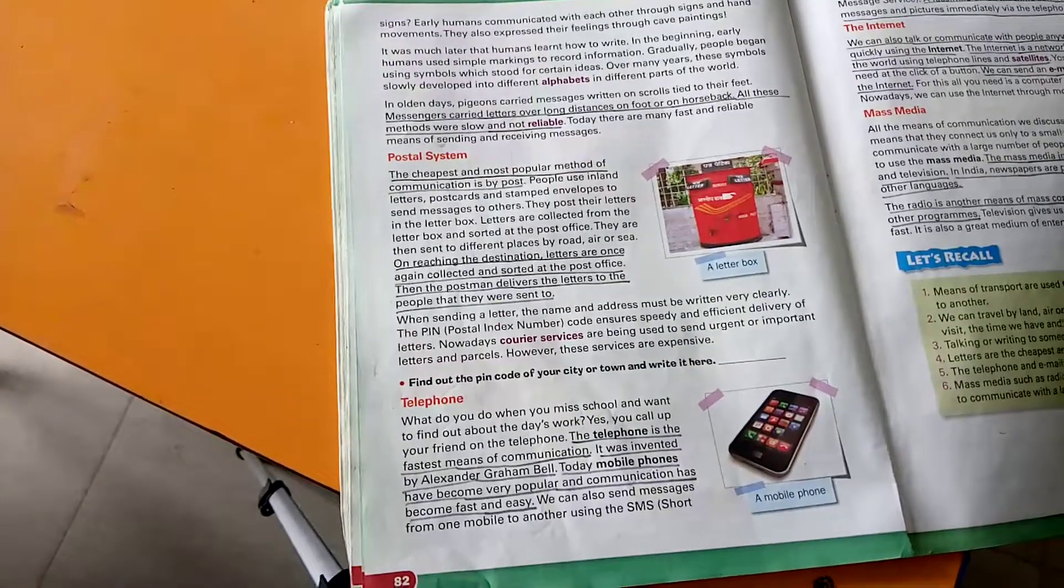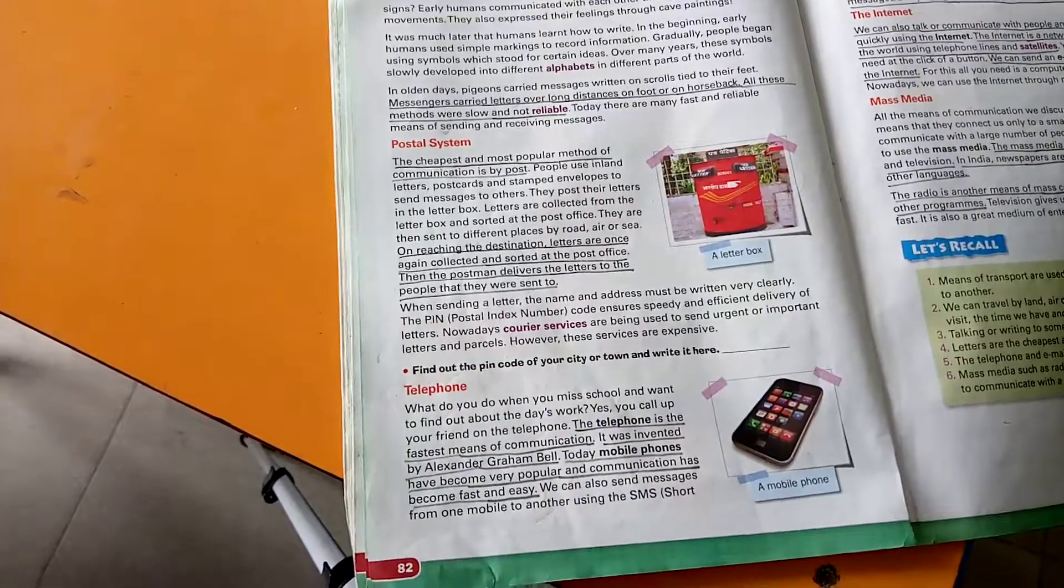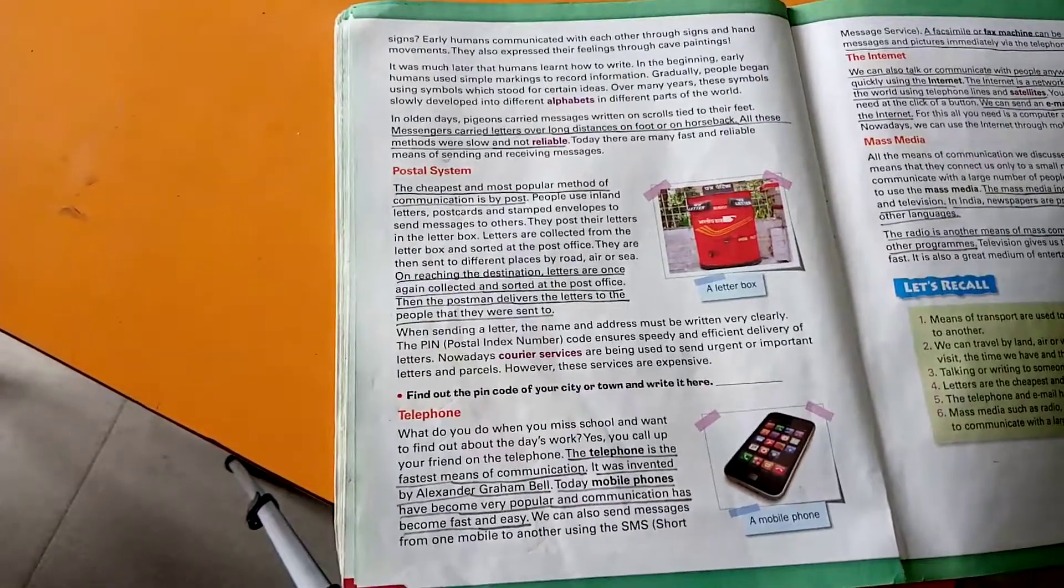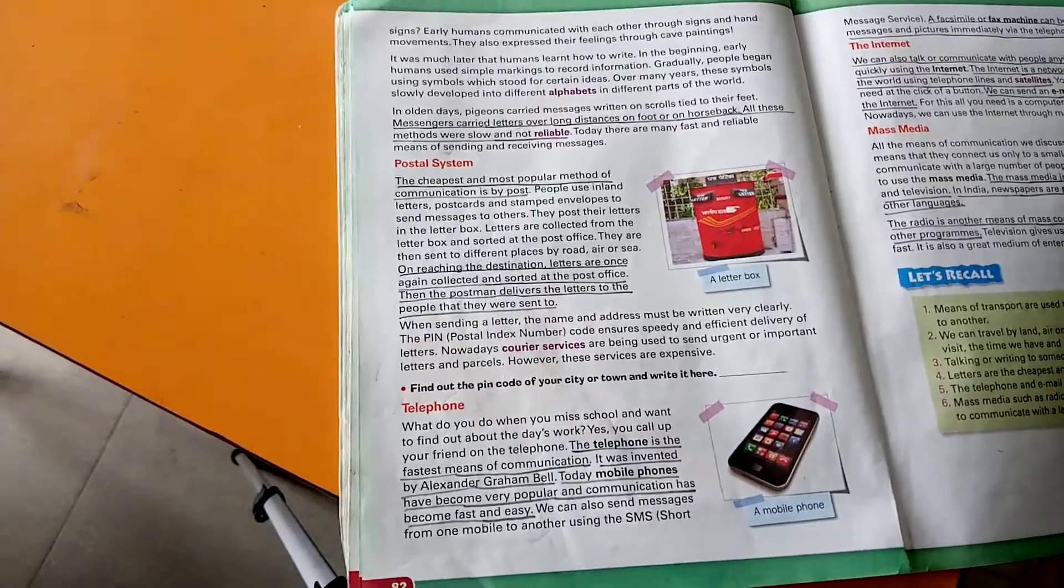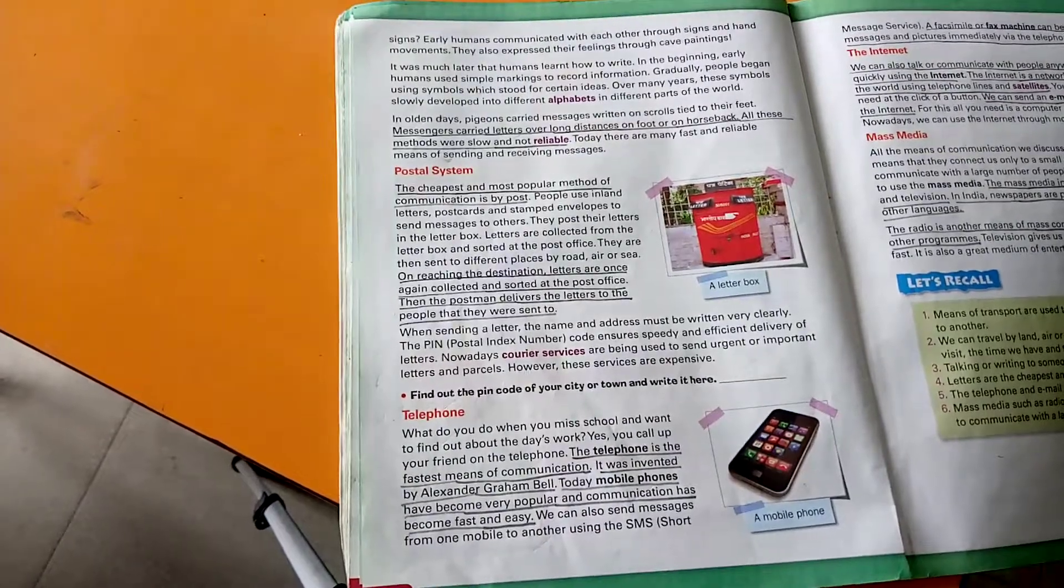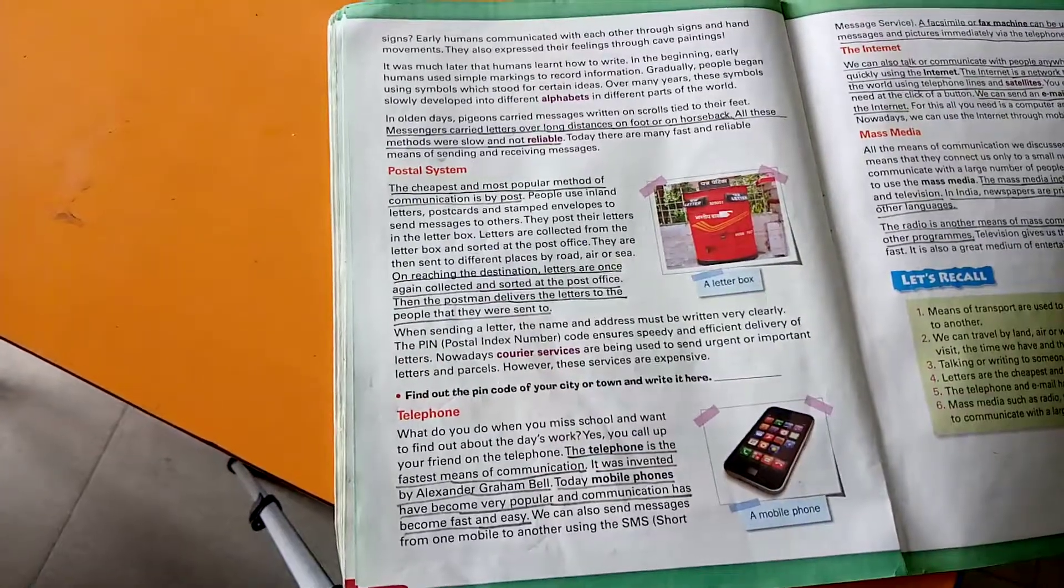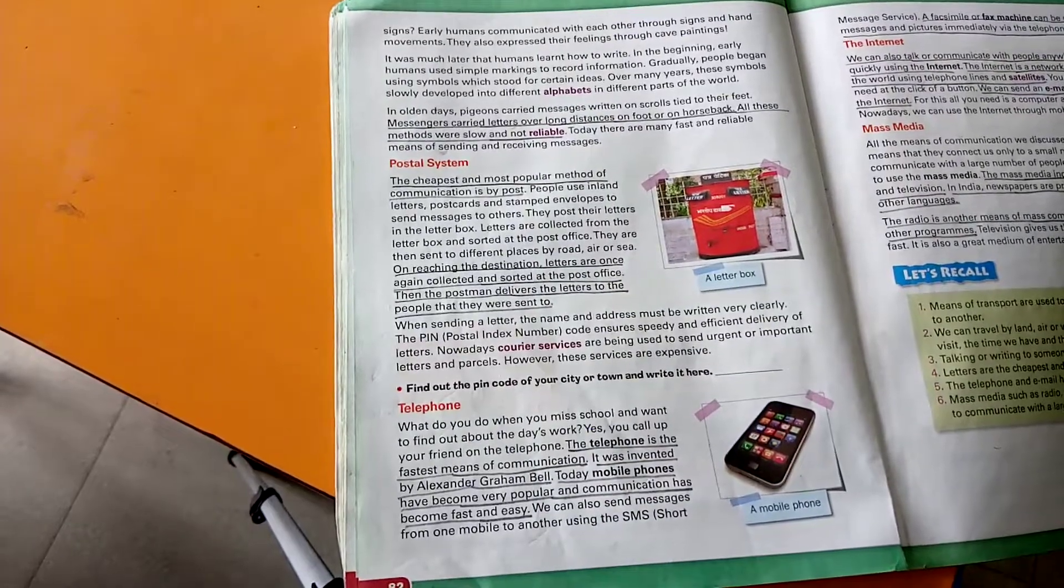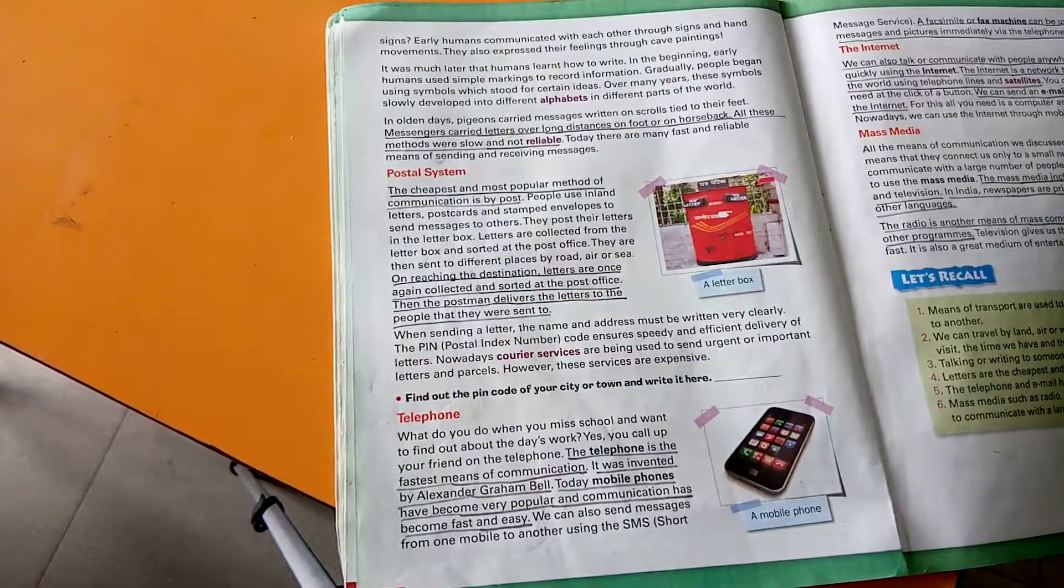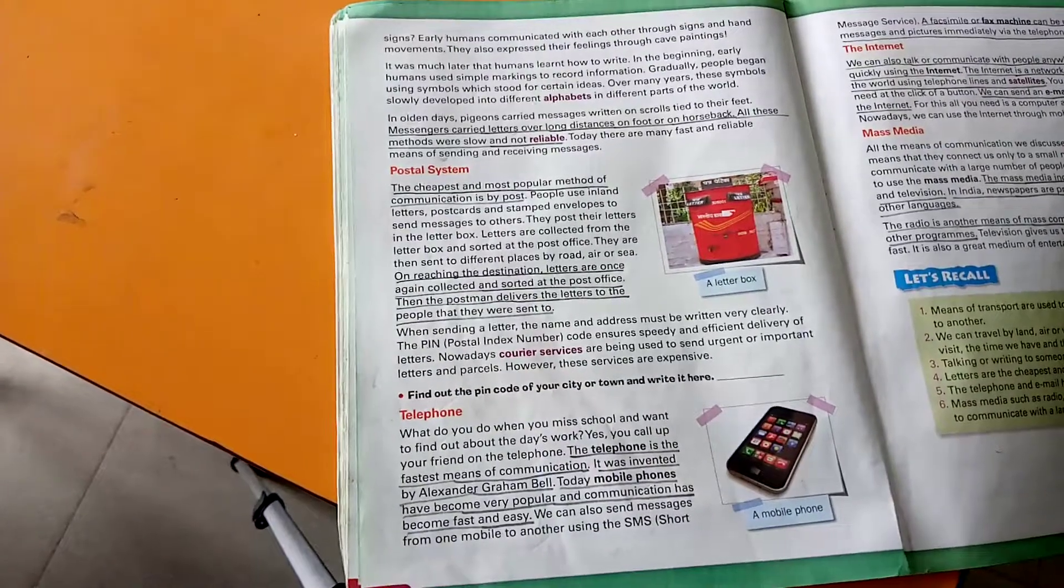People gradually learned how to write and they started expressing their views by writing. In olden days, pigeons carried messages written in scrolls tied to their feet. Messengers carried letters over long distances on foot or on horseback. All these methods were slow and not reliable. Today, there are many fast and reliable means of sending and receiving messages.